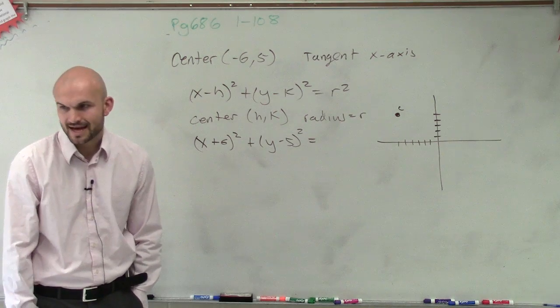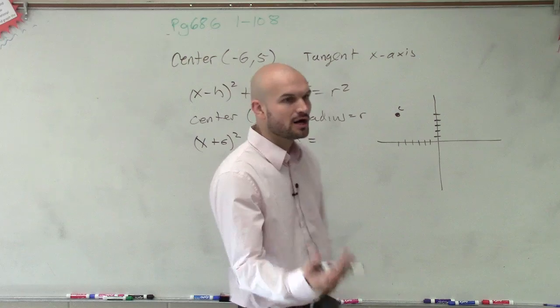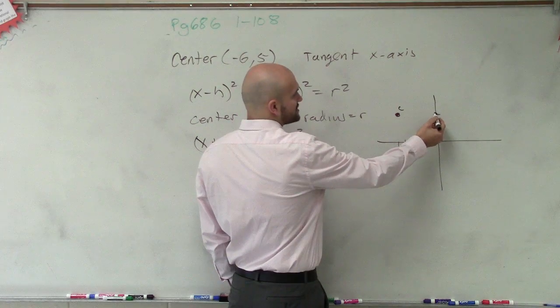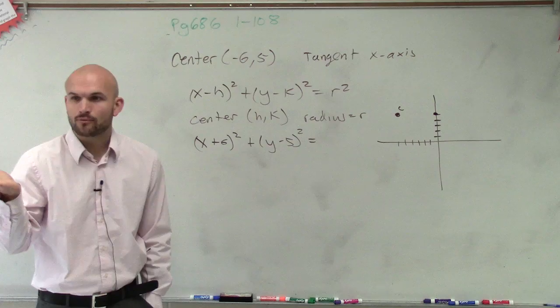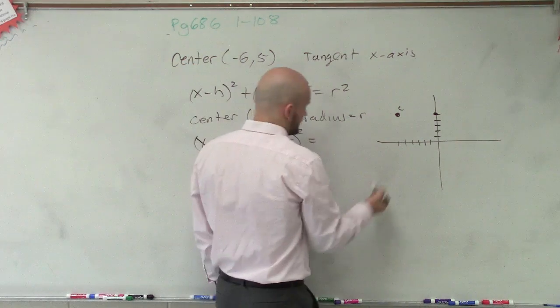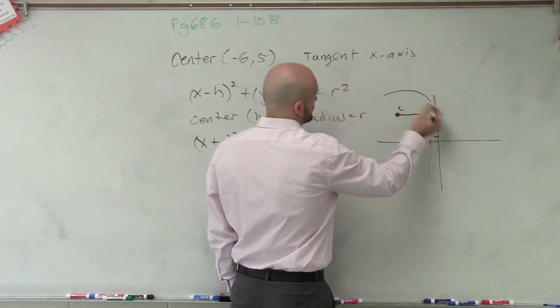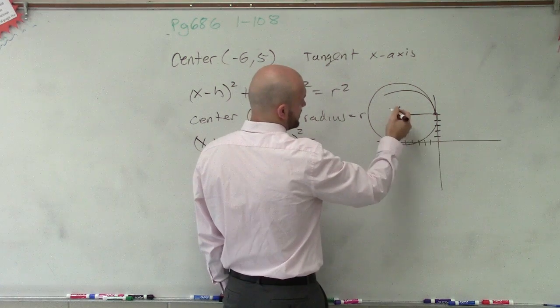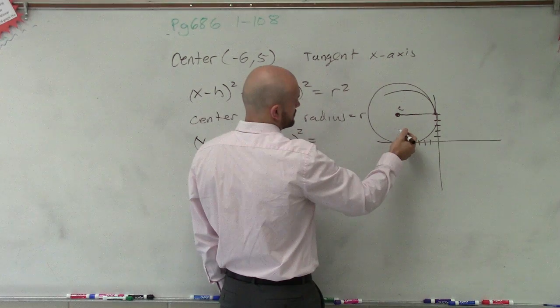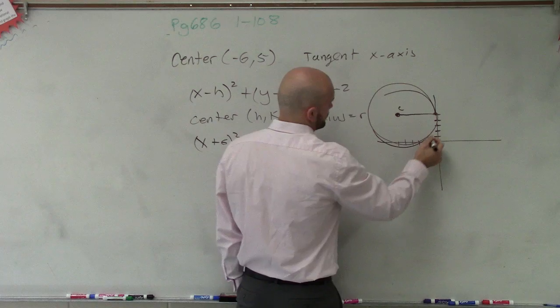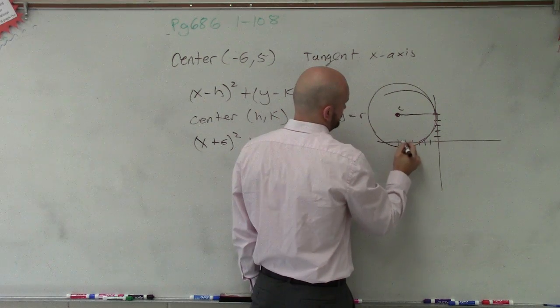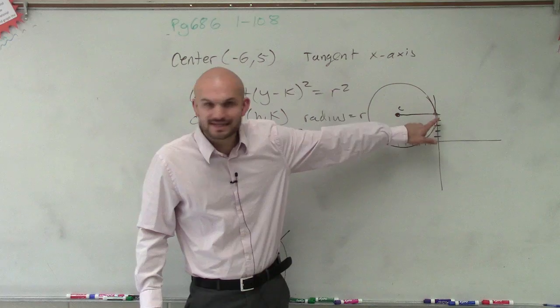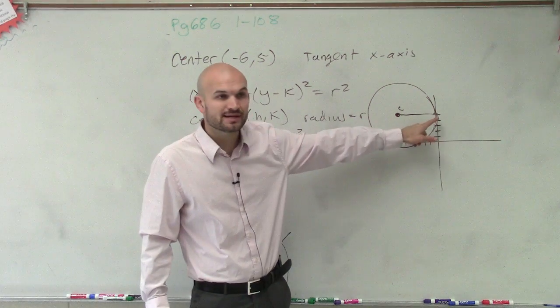Now, what they mean by tangent to the x-axis, is means that it's going to touch at exactly one point at the x-axis. So if I was going to graph a circle, I know that it's going to tangent to the x-axis means that it touches at that one point. So if you look at, like, a circle, so if I was going to draw a circle here, that'd be negative 6. That's up 5, negative 6, so I'm going to go like that. So it looks something like that. So what tangent to the x-axis means is that it just touches exactly at one point. So the circle touches at one point at the x-axis.